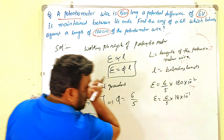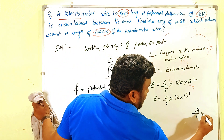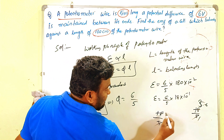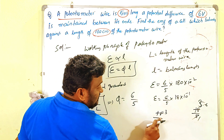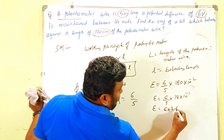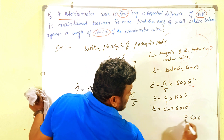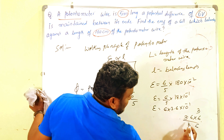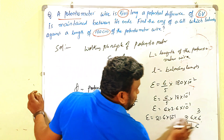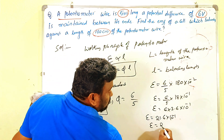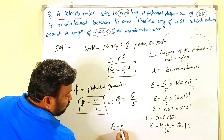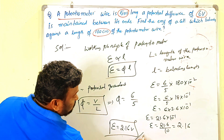Simplifying: 18 by 5 — five 3s are 15, 18 minus 15 gives 3, so 18 by 5 equals 3.6. Therefore epsilon equals 6 into 3.6 into 10 to the power of minus one. Calculating: 6 times 3.6 — six 3s are 18, plus 3 gives 21, so epsilon equals 21.6 into 10 to the power of minus one, which equals 2.16 volts. The EMF of the given cell is 2.16 volts.